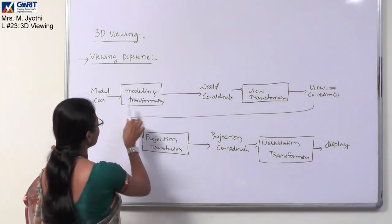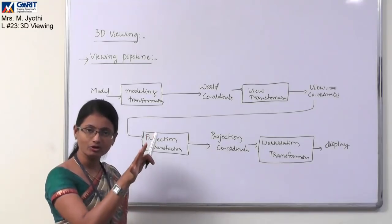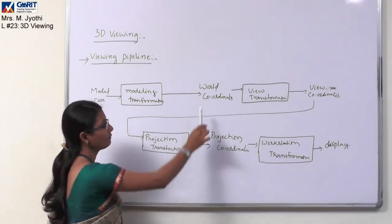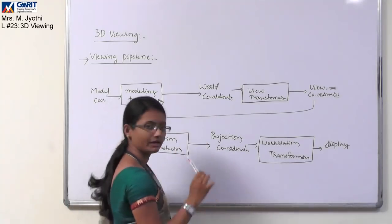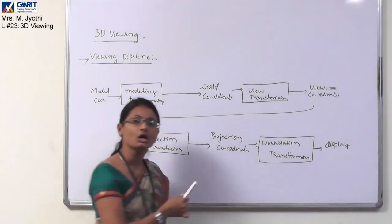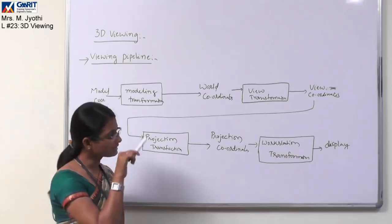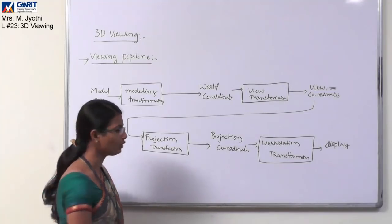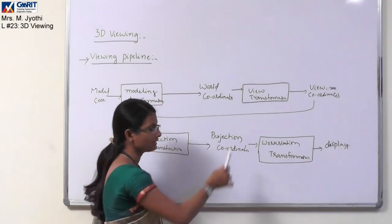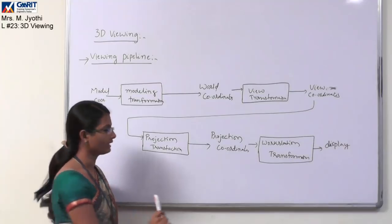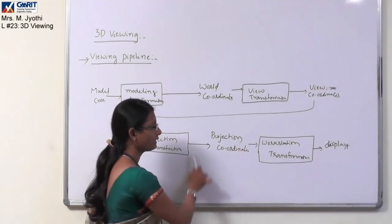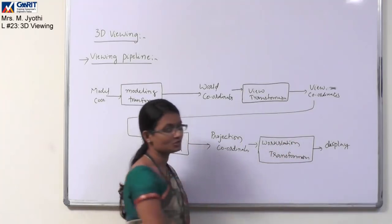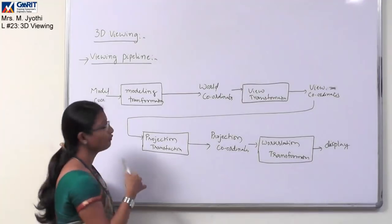To summarize the pipeline: first, select the view volume of world coordinates using modeling transformation; then convert world coordinates to view coordinates using viewing transformation; then convert those 3D viewing coordinates to 2D projection coordinates using projection transformation; and finally display the result on the display device using workstation transformation. This is your complete viewing pipeline.